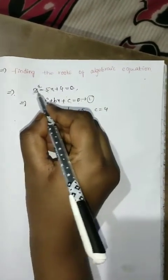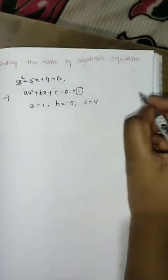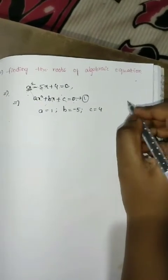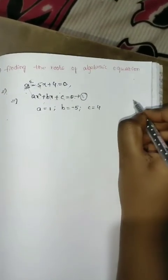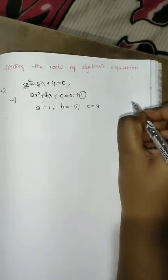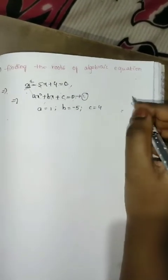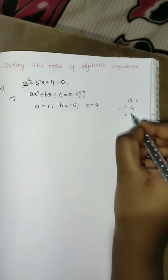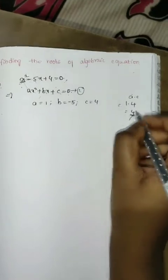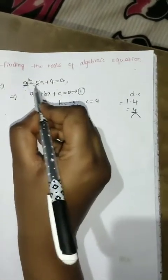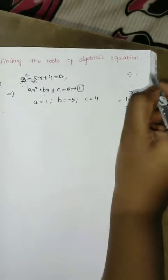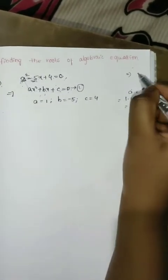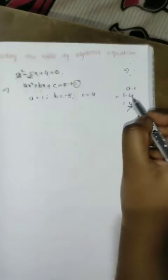In the factorization method, we multiply the first term and the last constant term, that is a into c, which equals 1 into 4, giving us 4. The b value is minus 5, so by using addition or subtraction, we need the middle term to be 5. So 1 plus 4 gives 5.